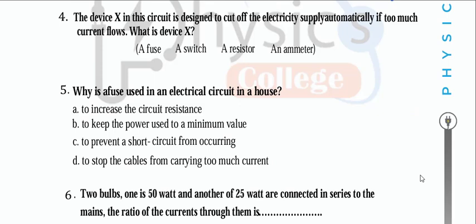Device X in a circuit is designed to cut off electricity supply automatically if too much current flows — this device is called a fuse. A fuse is used in electric circuits to stop cables from carrying too much current beyond their rated capacity.